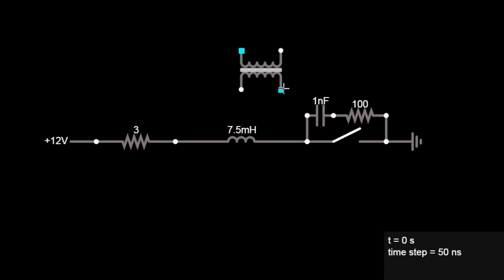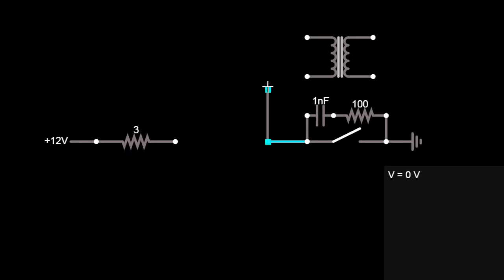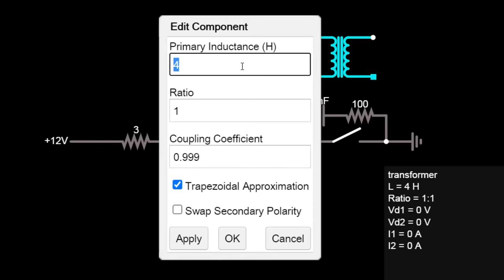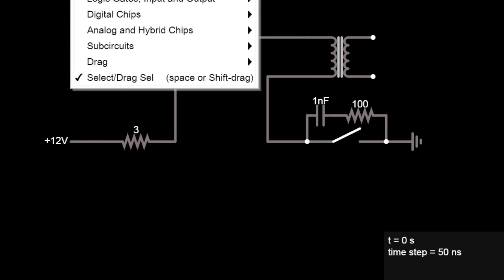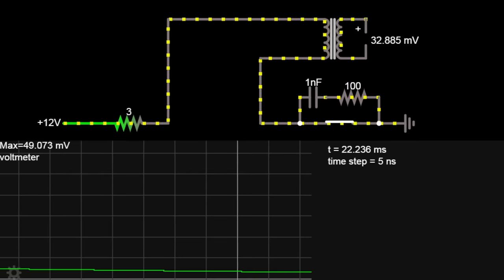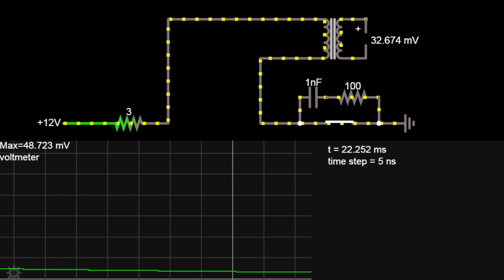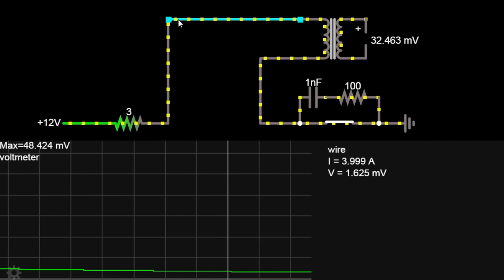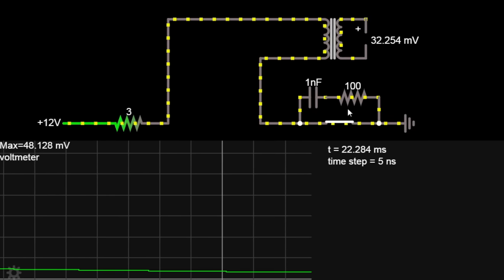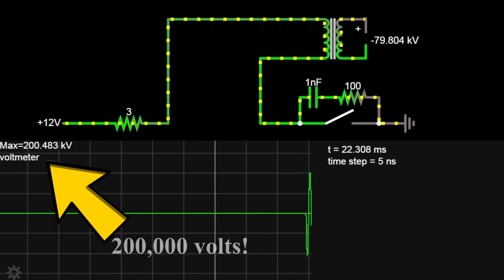Now I'll expand this idea even further by adding a secondary coil to this arrangement and turning the whole thing into a transformer. A step-up ratio of about 20 is realistic for an ignition coil like this. Now I'll graph the voltage of the secondary coil and run the simulation again. The voltage peaks at an amazing 200,000 volts, with just 12 volts of input.